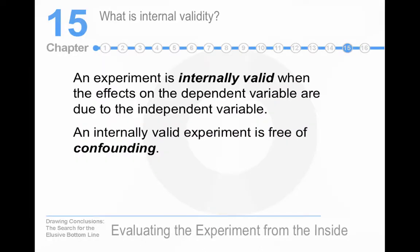We start by discussing what is internal validity. An experiment is internally valid when the effects of the dependent variable are due to the independent variable. Internal validity allows us to make causal statements, and experiments are internally valid in principle because we control the antecedent conditions, which means that we assign people to their treatment groups.